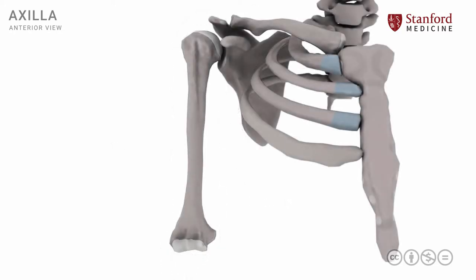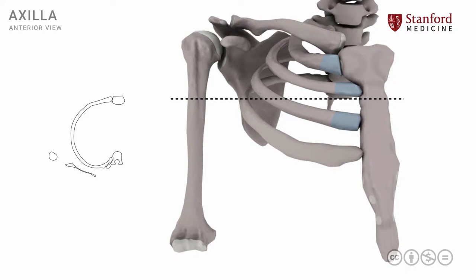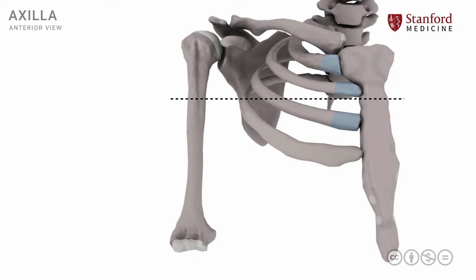If we represent this with a 3D model as seen here, we can create a representation of that transverse section and understand it in a much better way. We will make a section at about this level, which will result in the formation of a transverse section as seen here on the left side of your screen. It's sometimes difficult to conceptualize how we have arrived at this transverse section, so let me play a little animation that might help you in that mental rotation exercise.